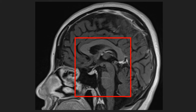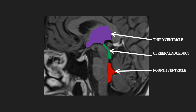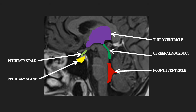Now we will focus on some of these structures in the sagittal plane, as well as look at the pituitary fossa. CSF flows from the third ventricle, through the cerebral aqueduct, into the fourth ventricle. Anterior to this, in the pituitary fossa, is the pituitary gland, highlighted in yellow, and the pituitary stalk is seen above this, highlighted in green. Finally, the optic chiasm lies above the pituitary gland.